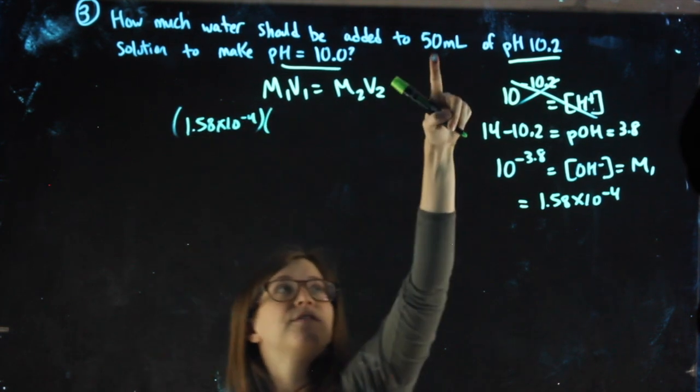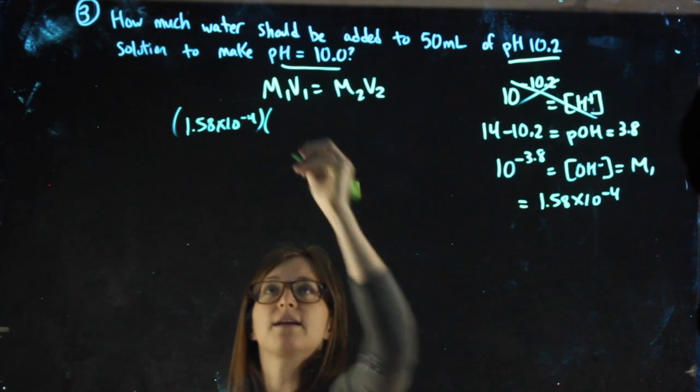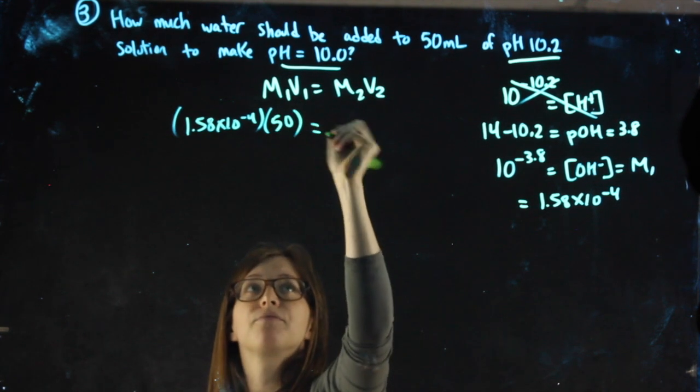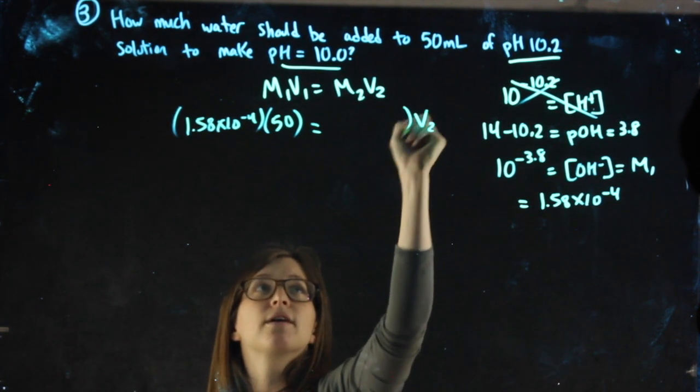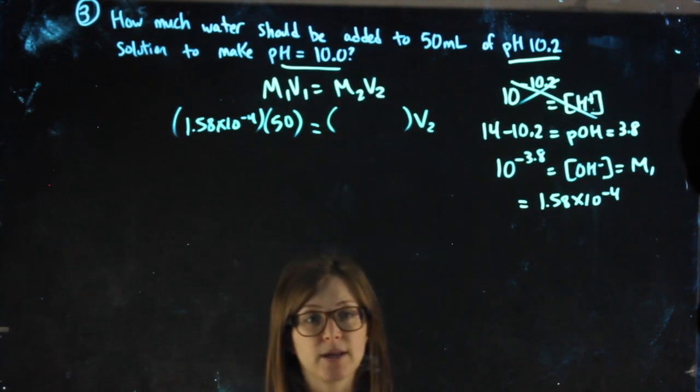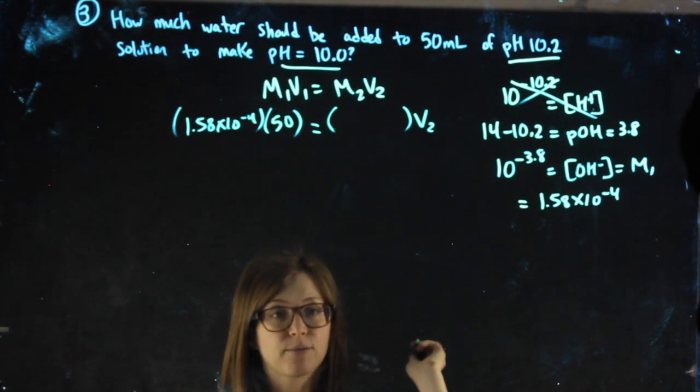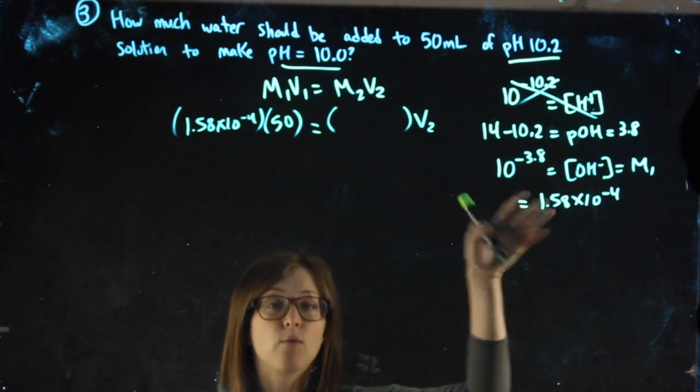So I have 50 mils of the solution that gave me that number, that will be my first volume. My second volume is what I'm looking for, so I just need to plug in the other molarity, which also is going to come from the pH, but I'm going to approach it the same way.